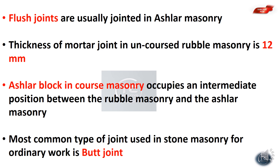The most common type of joint used in stone masonry for ordinary work is the butt joint. In stone masonry, the most common type of joint is the butt joint.